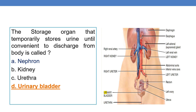Next: the storage organ that temporarily stores the urine until it is convenient to discharge from the body is called the urinary bladder. The urinary bladder is the temporary storage organ that temporarily stores the urine.